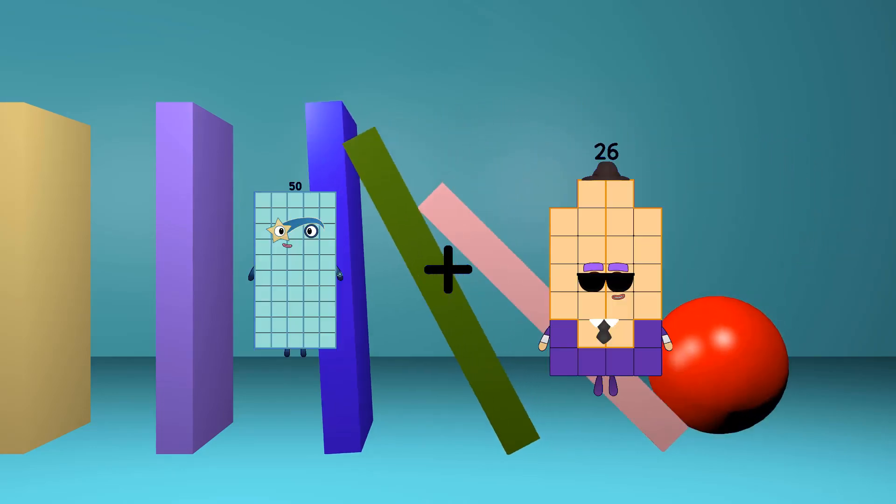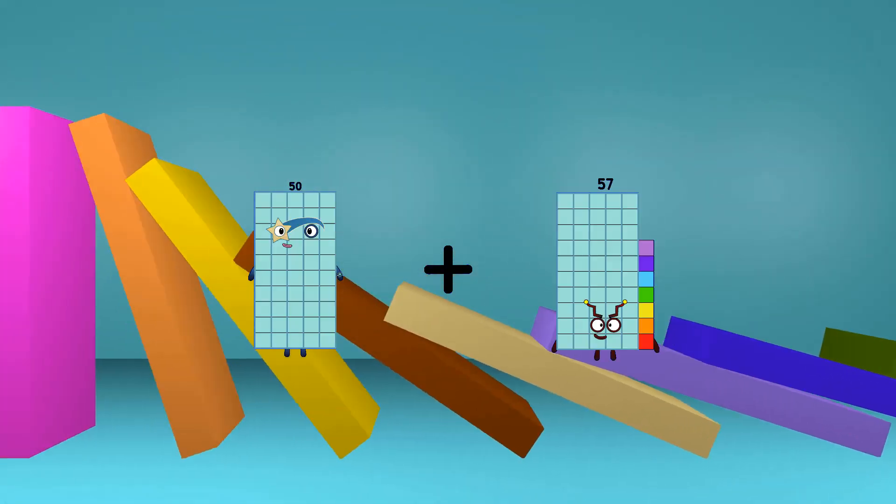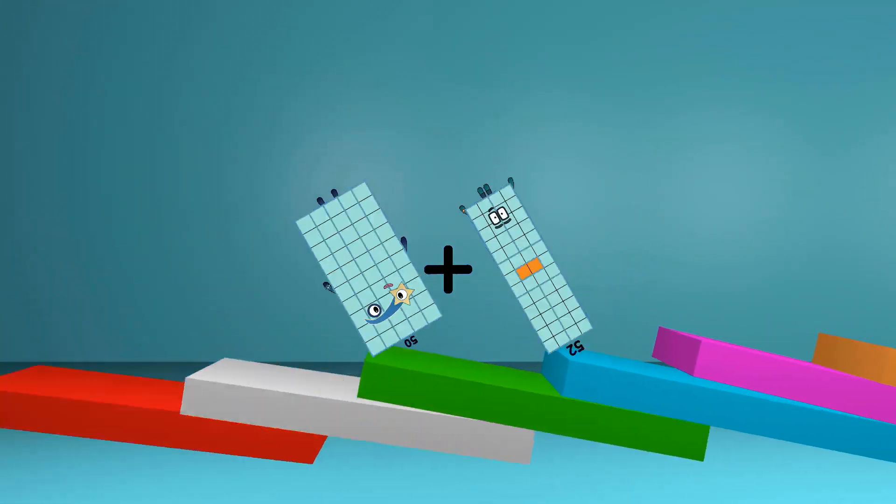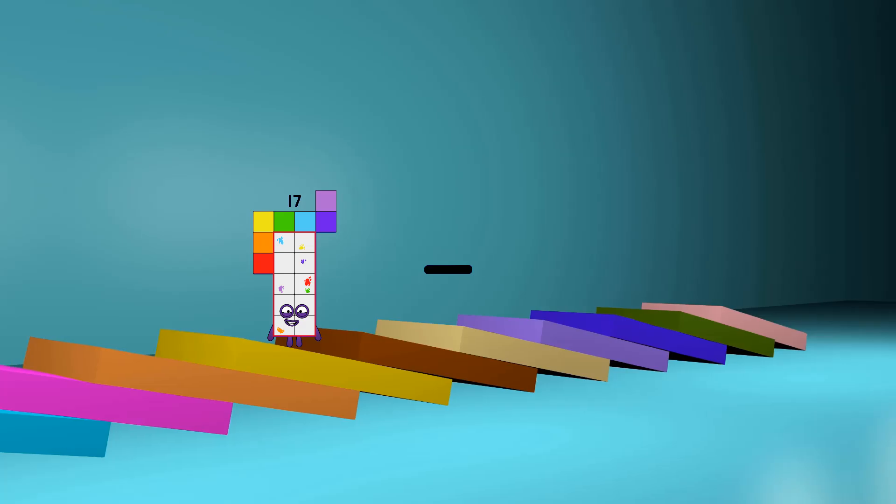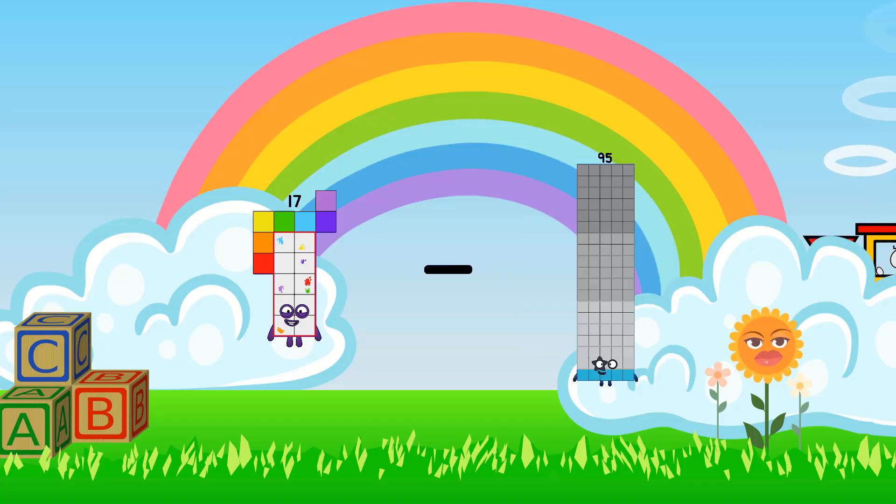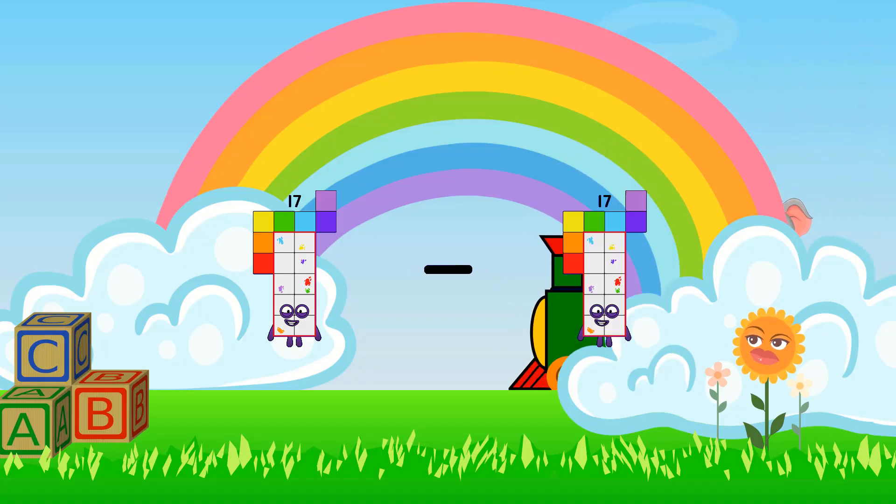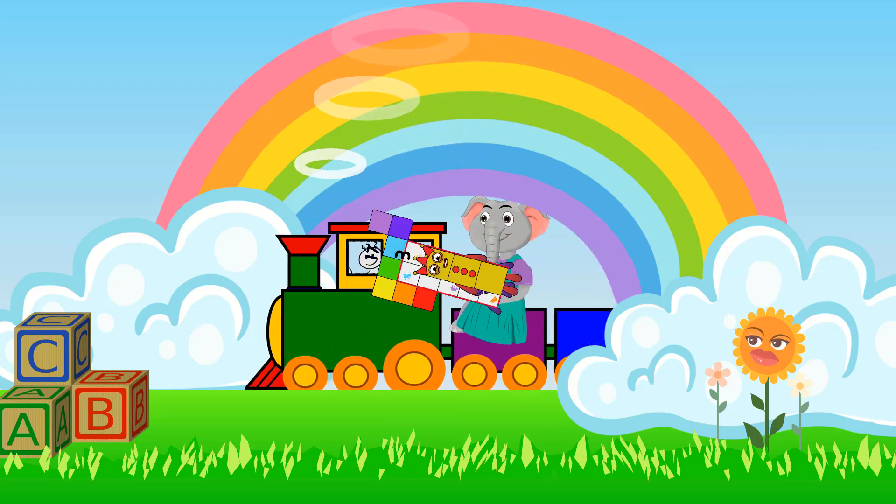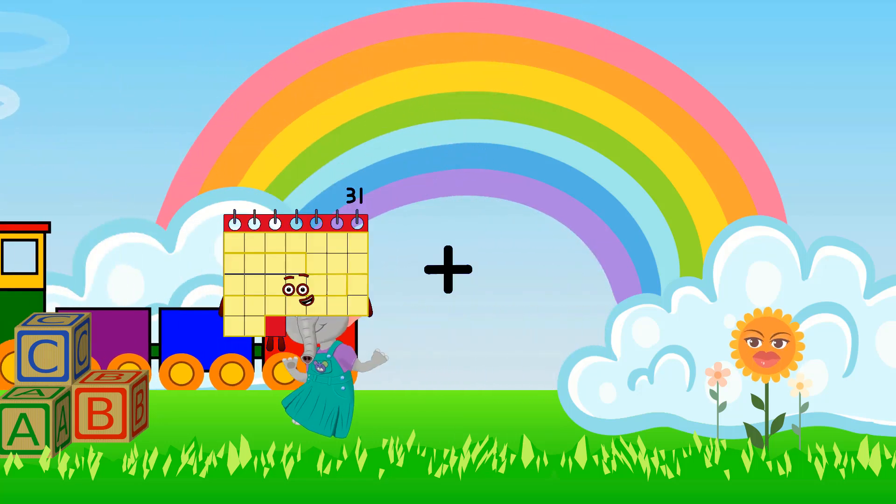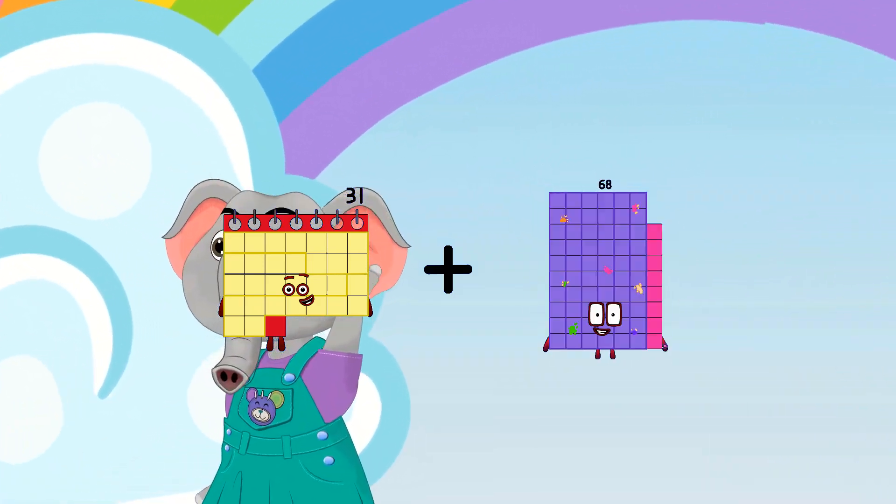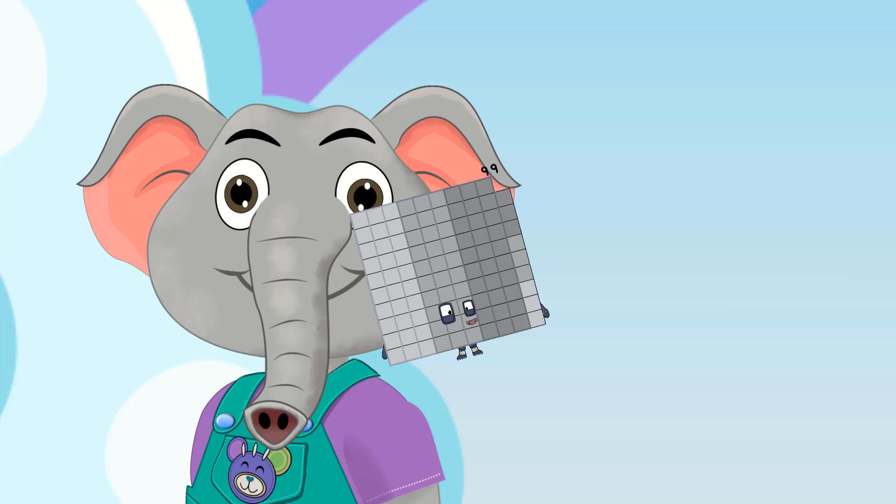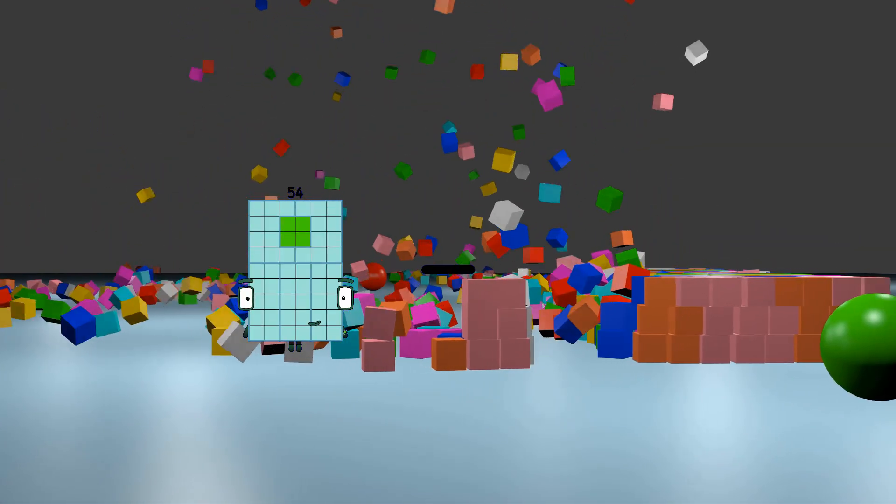50 plus 52 equals 102. 17 minus 3 equals 14, 31 plus 68 equals 99.